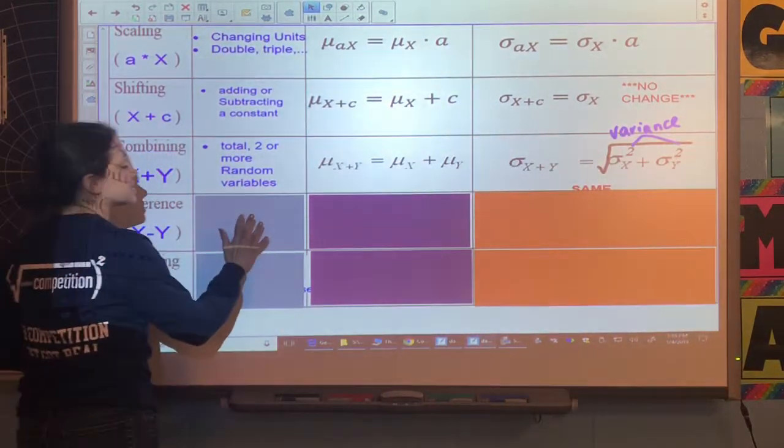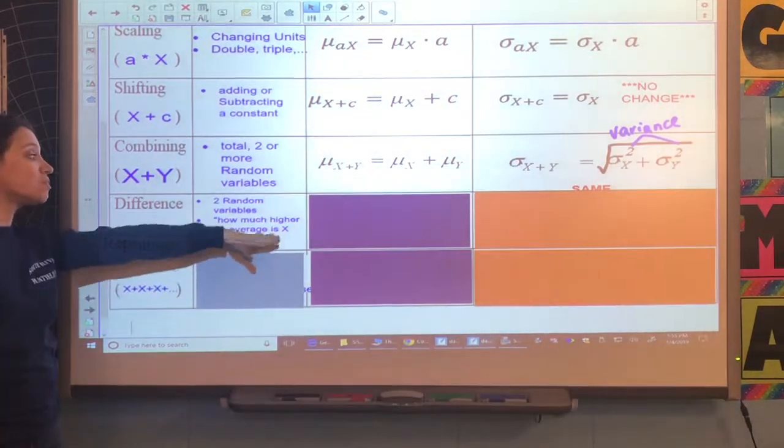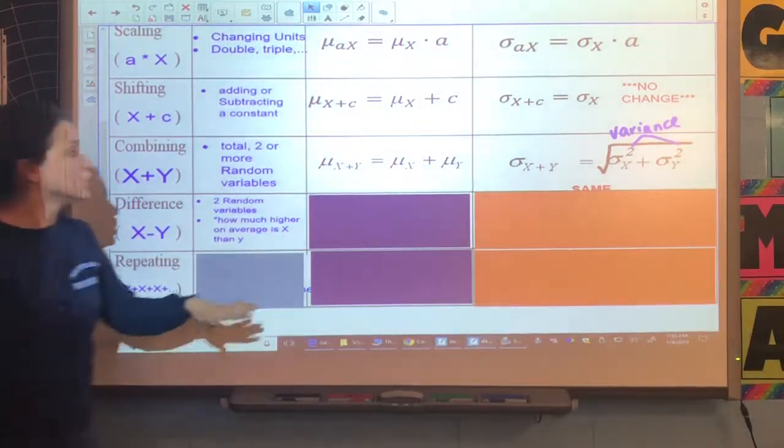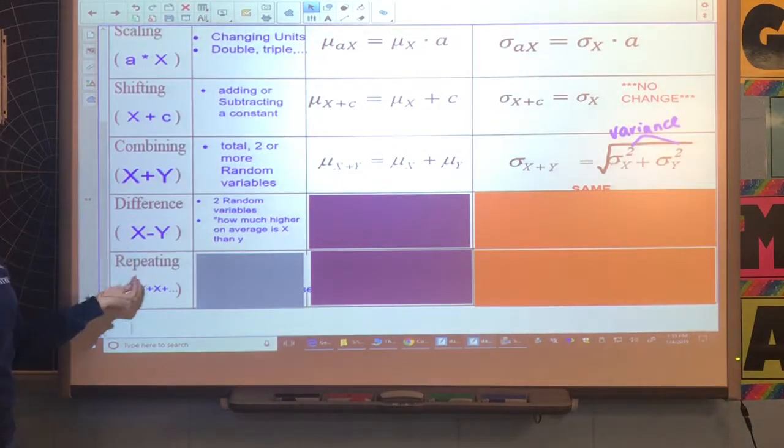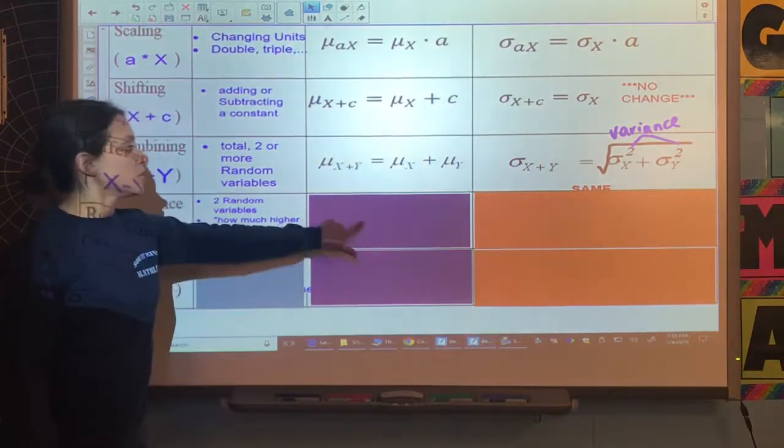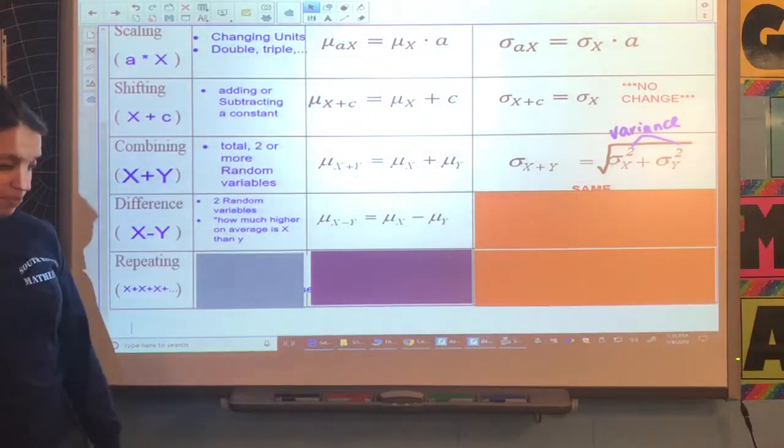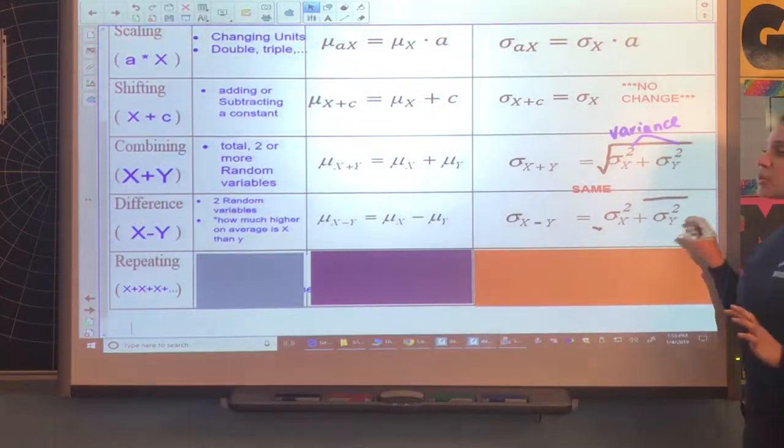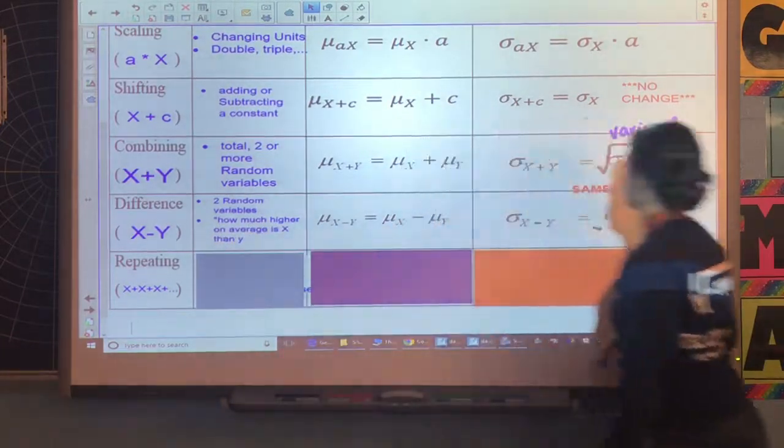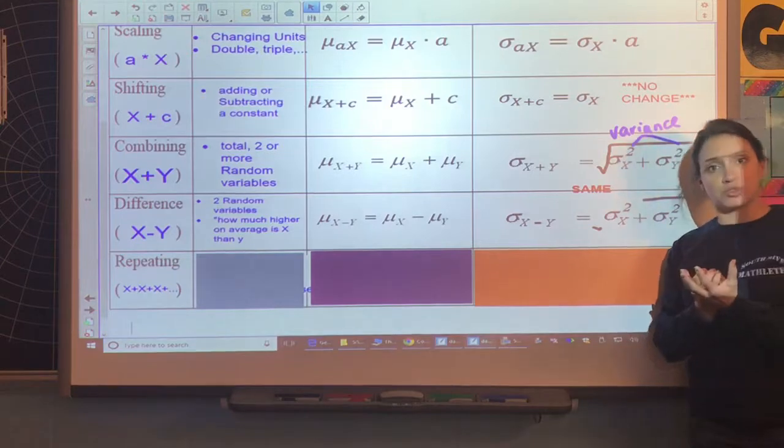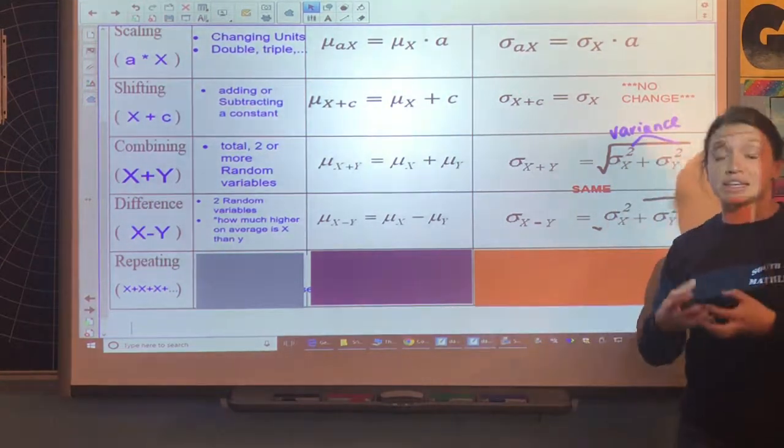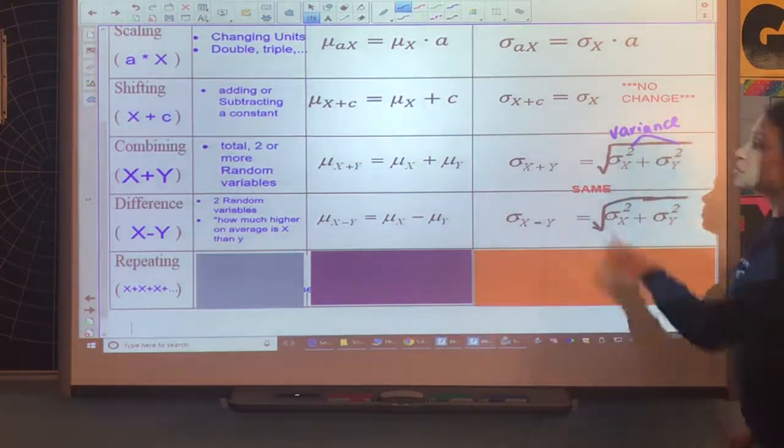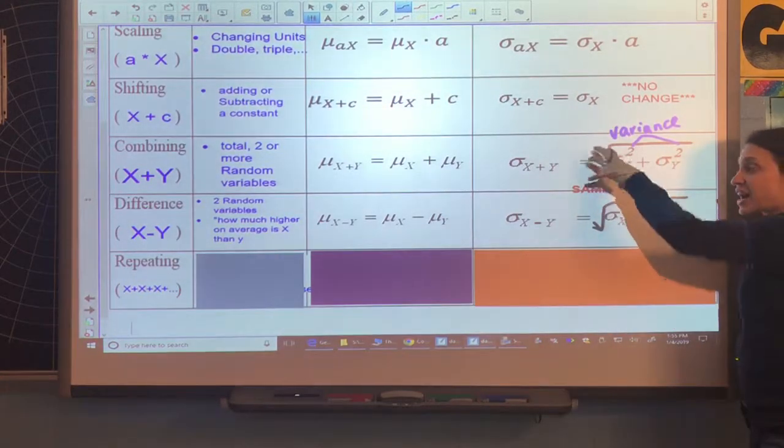What if we were looking at the difference between the two events, two random variables? How much higher on average is X than Y? This is an example of what that problem might look like. We're looking at the difference between random event X and random event Y. The means you will subtract them. Here's the interesting thing: even though we looked at the difference between the two variables and we're using subtraction, we are combining two distributions, so that means I have to combine their spread or their variance. These two, combining and finding the difference, actually have the same standard deviation.